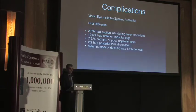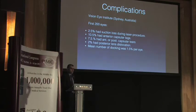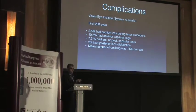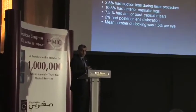There have been studies on LenSx complications. An Australian study found — especially in the first 200 patients compared to a later 1,000-patient series — that 2.5% had suction loss, 10% had anterior capsular tags, 7.5% had anterior and posterior capsular tears, and 2% had posterior lens dislocation. This last complication is the most important: be very careful with hydrodelineation in this procedure, as hydrodissection is very dangerous and can lead to posterior lenticular drop. The mean number of docking attempts was 1.5 per eye in the first 200 patients.